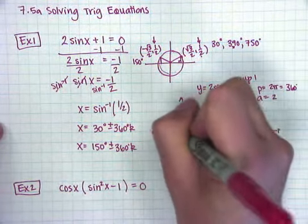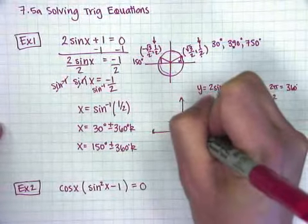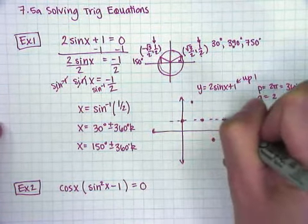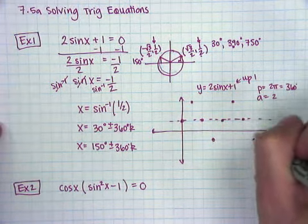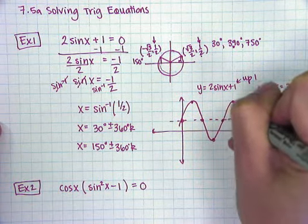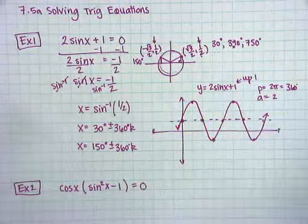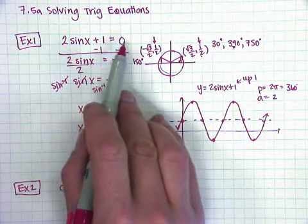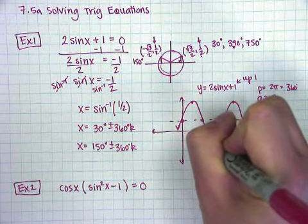So if I were to graph this, my midline is going to be shifted up 1. My amplitude is up 2, so I start at my midline, I would go up 2, come back to the midline. I would go down 2, back up to the midline. And it would follow its wave. And this wave would go on forever and ever in both directions. And what's happening is when this thing is equal to 0 is when it's hitting the x-axis.